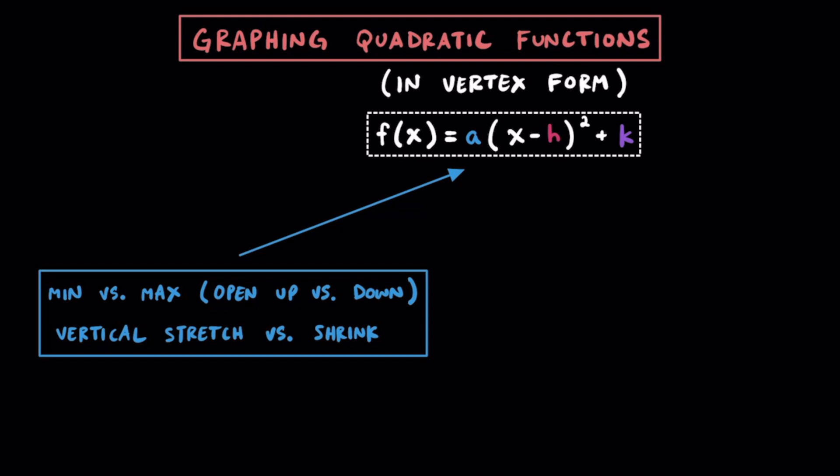If a is positive, we're going to have a minimum and the parabola opens up, and if a is negative, we're going to have a maximum and the parabola will open down. And if the absolute value of a is greater than one, then we're going to have a vertical stretch or the parabola gets skinnier, and if the absolute value of a is less than one, then we're going to have a vertical shrink or it gets a little wider.